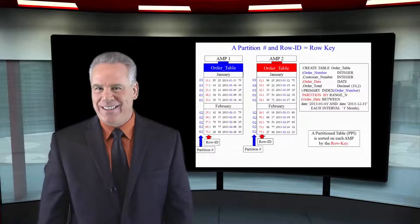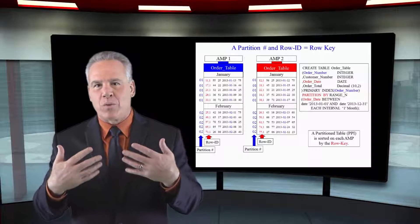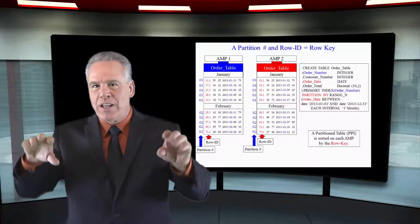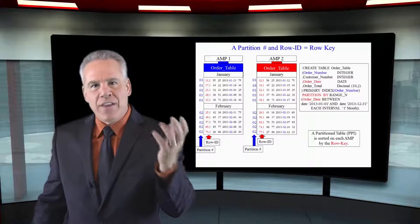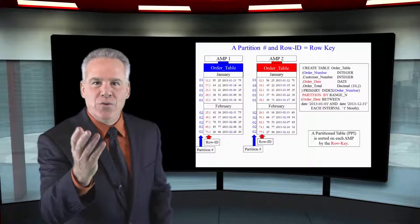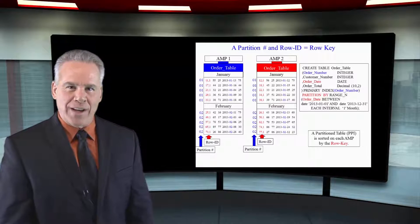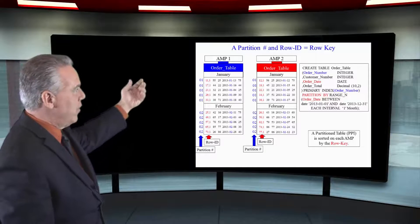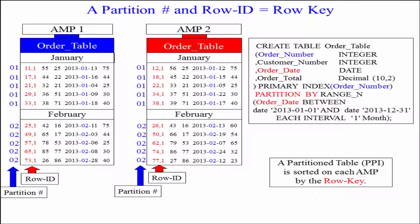Let's take a detailed look at this. We know that order number was the primary index. Each order number was hashed and those rows sent to the proper AMP, and then that AMP gave each one of those rows a uniqueness value, which always forms the row ID. So you will now see that we have partition number one, and the row ID, and then the row itself. That is called the row key. The row key would be defined as the partition number and the row hash, and that's how Teradata is going to sort that data.